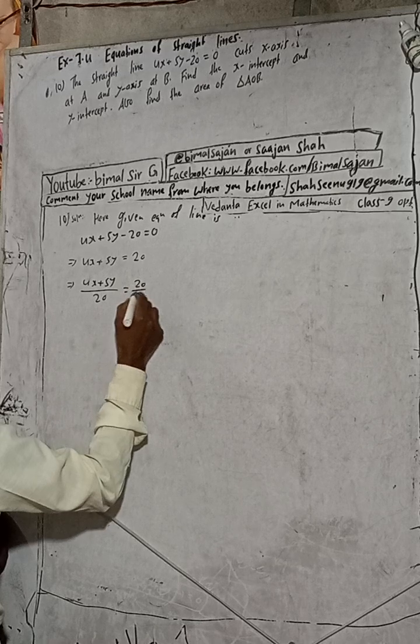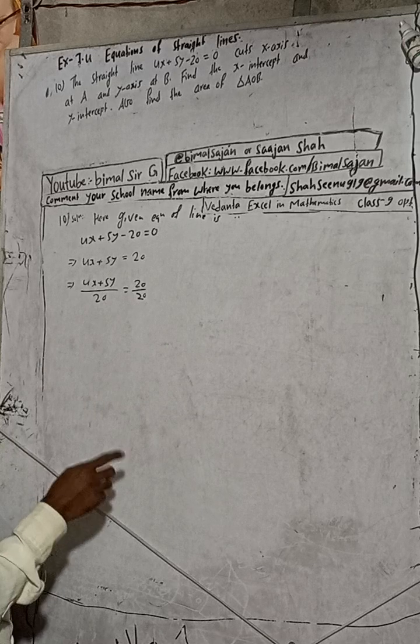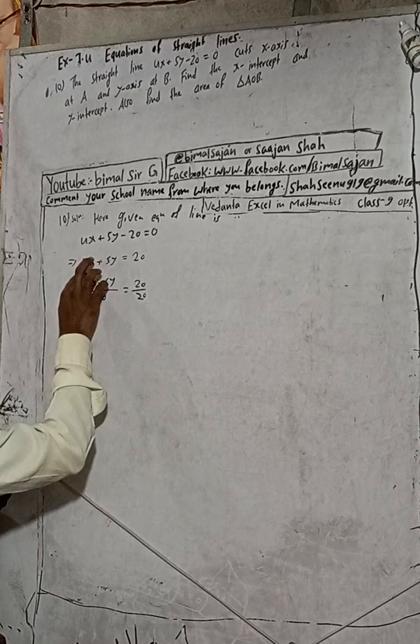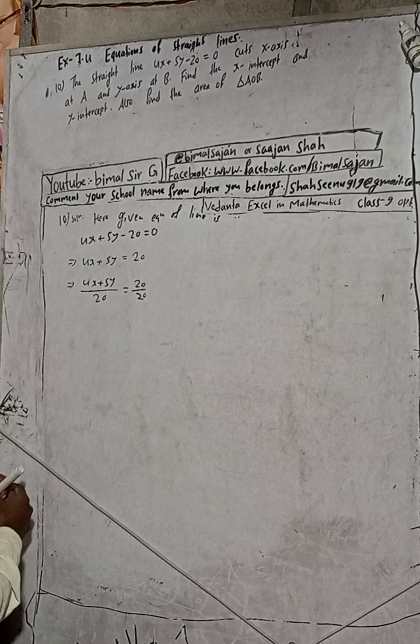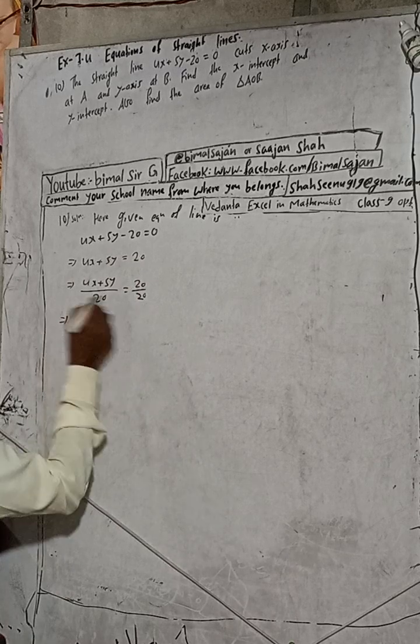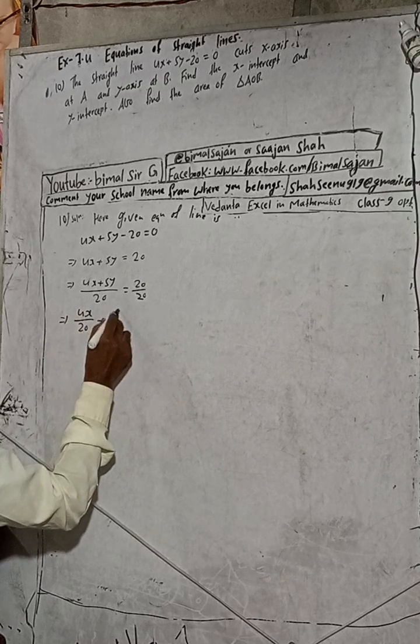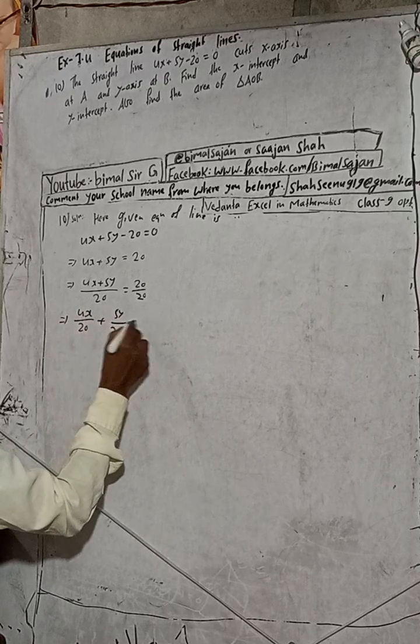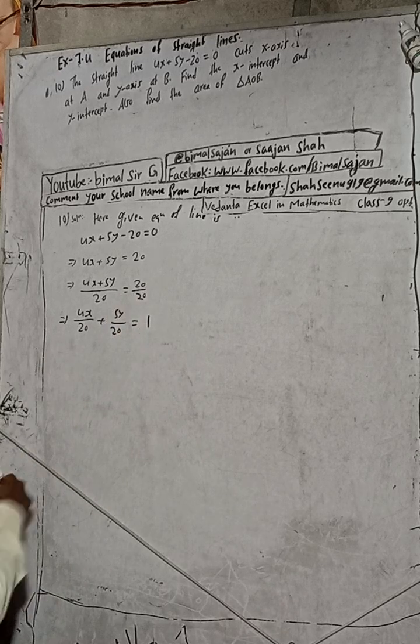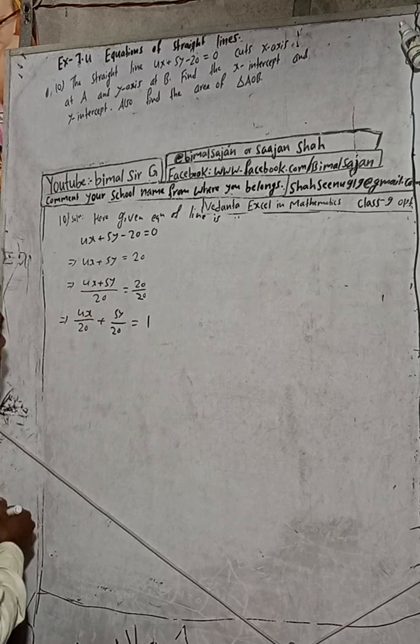Now divide by 20: 4x plus 5y by 20 is equal to 20 by 20. We will split this line. This splitting means 4x by 20 plus 5y by 20 is equal to 20 divided by 20, which is 1. When you take this LCM 20, you will get back the same equation.